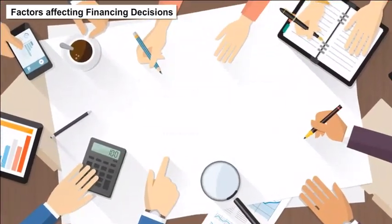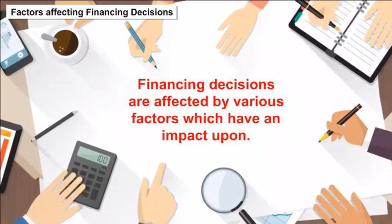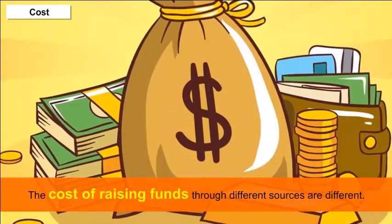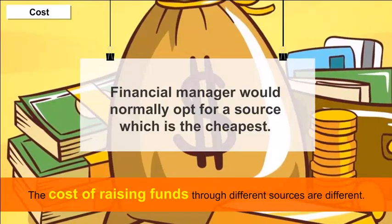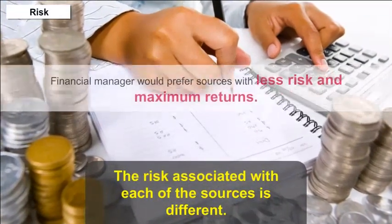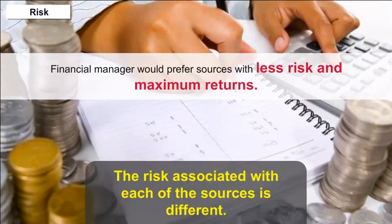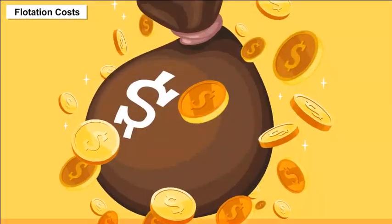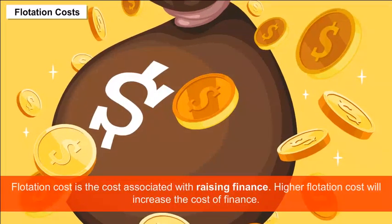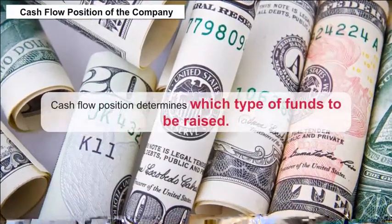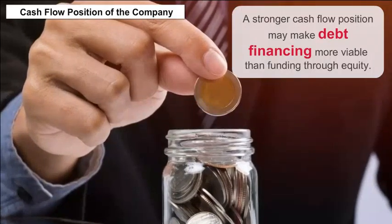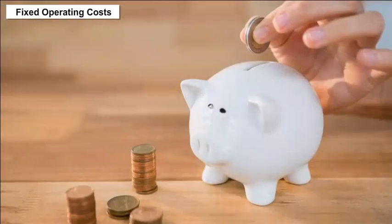Factors Affecting Financing Decisions: The cost of raising funds through different sources varies; a financial manager would normally opt for the cheapest source. The risk associated with each source is different; a financial manager would prefer sources with less risk and maximum returns. Flotation cost is the cost associated with raising finance — higher flotation cost will increase the cost of finance. Cash flow position determines which type of funds to be raised.